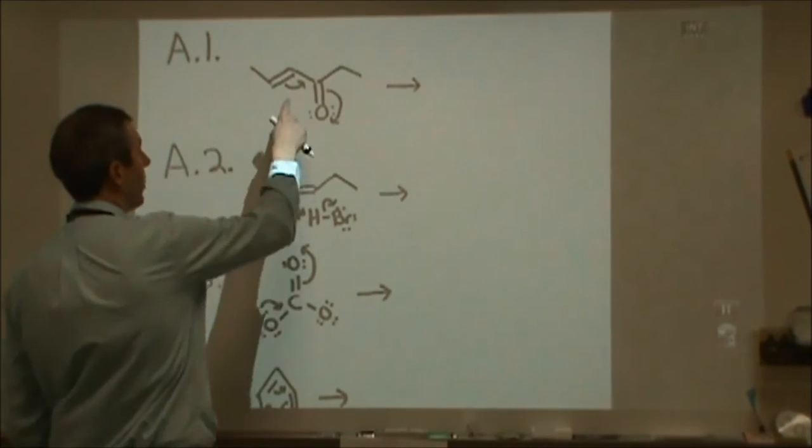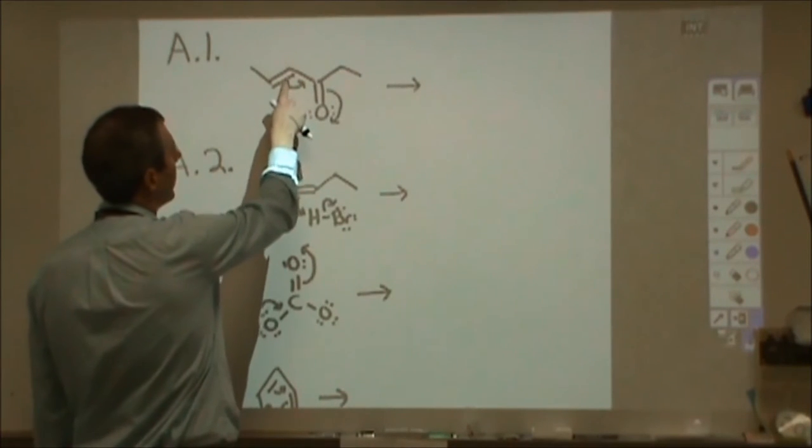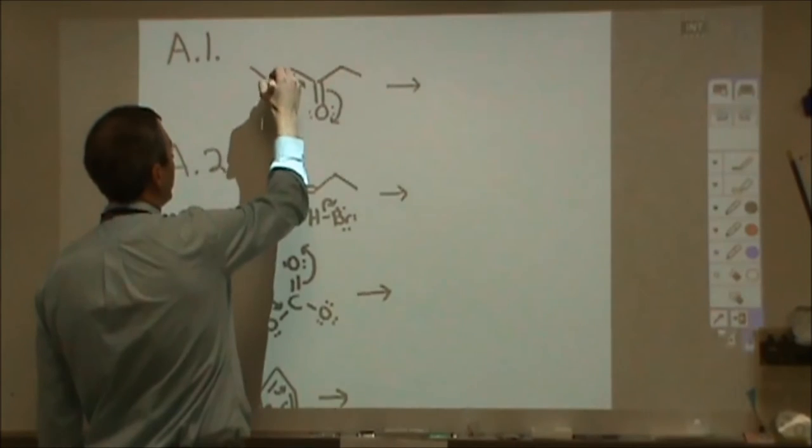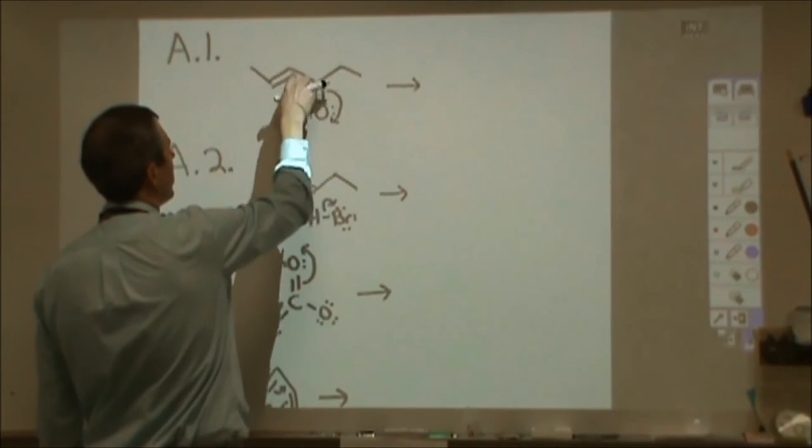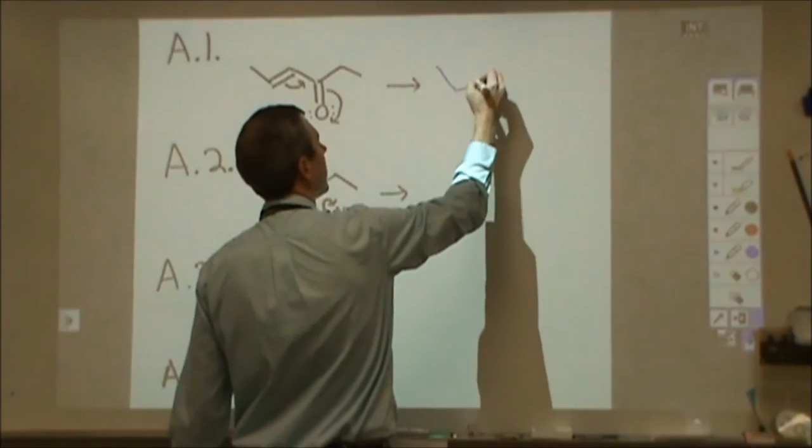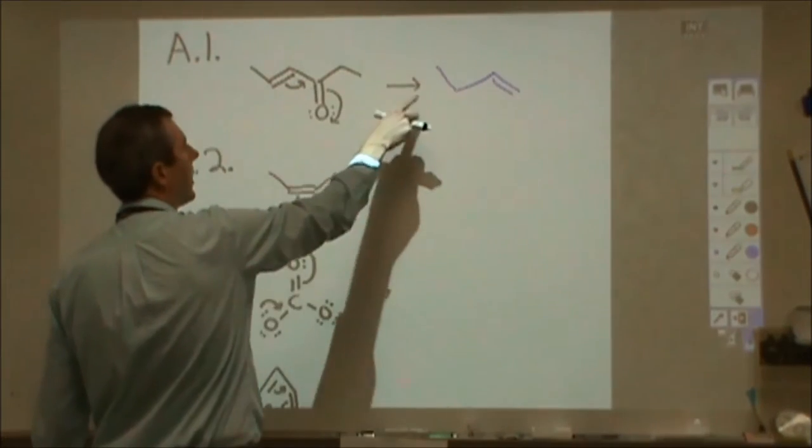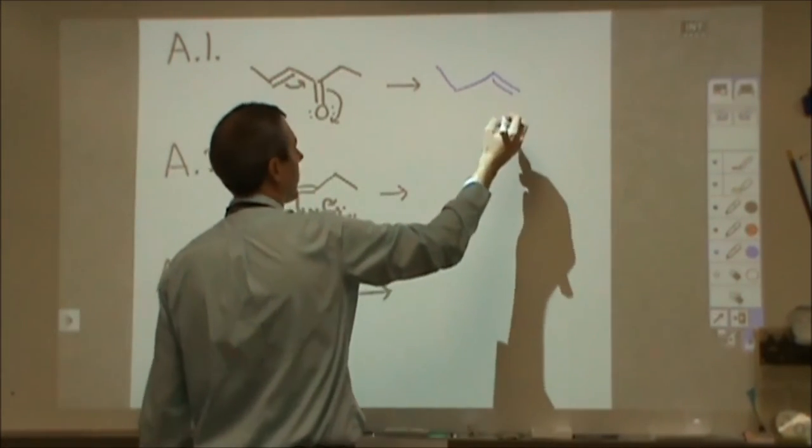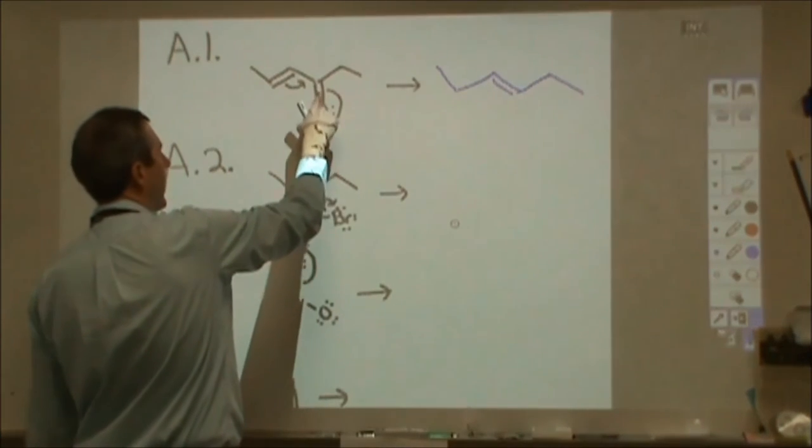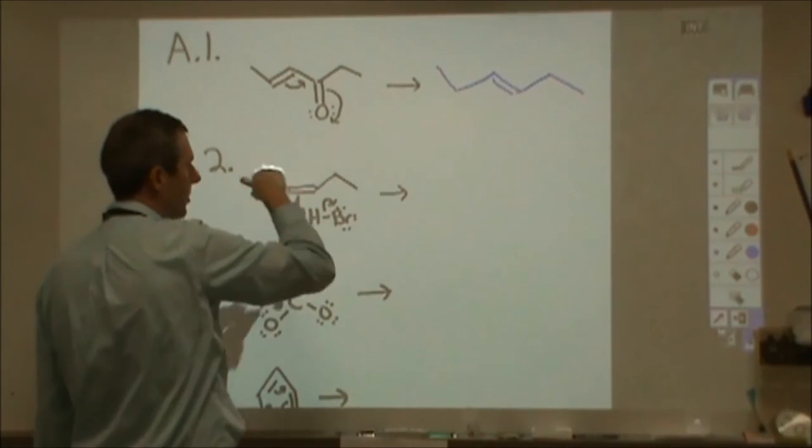So when I have a curly arrow here, what that's telling me is that one of these bonds, the pi bond here, is going to move between these two carbons to these two carbons. So if I were to draw that, I would move my double bond from this location to this location. Also, I'm having the pi bond here moving over to the oxygen atom exclusively.